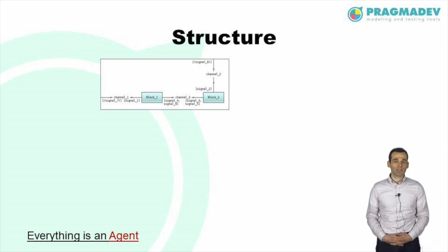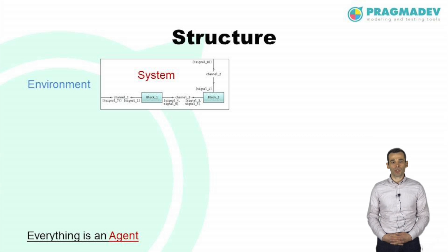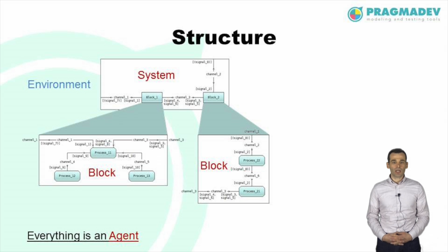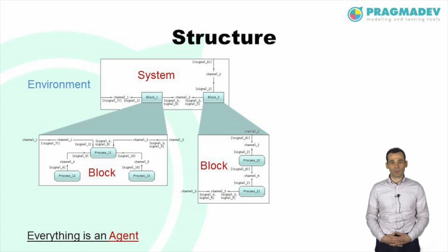The structuring entities of an SDL model are called agents. The system is the top-level agent — it can contain other agents but cannot be contained by any agent. Everything outside of the system is defined as the environment. Blocks are containers of agents, used to break down the complexity and size of systems. The system itself is a block, that is, the top-level container.